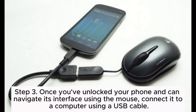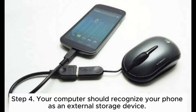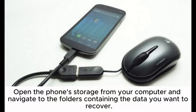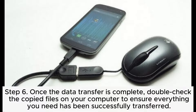Step 4: Your computer should recognize your phone as an external storage device. Open the phone storage from your computer and navigate to the folders containing the data you want to recover. Step 5: Copy the desired files from your phone storage to your computer's hard drive. Step 6: Once the data transfer is complete, double-check the copied files on your computer to ensure everything you need has been successfully transferred.